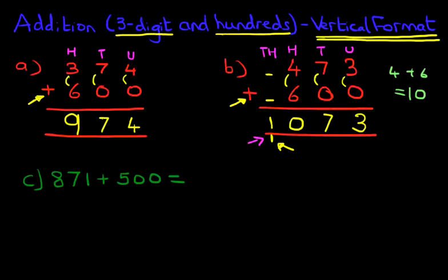So the first step is to rewrite the question in the vertical format and make sure you write it nicely and neatly, one number above the other. 871 plus 5 below the 8, 500. Nice neat columns.